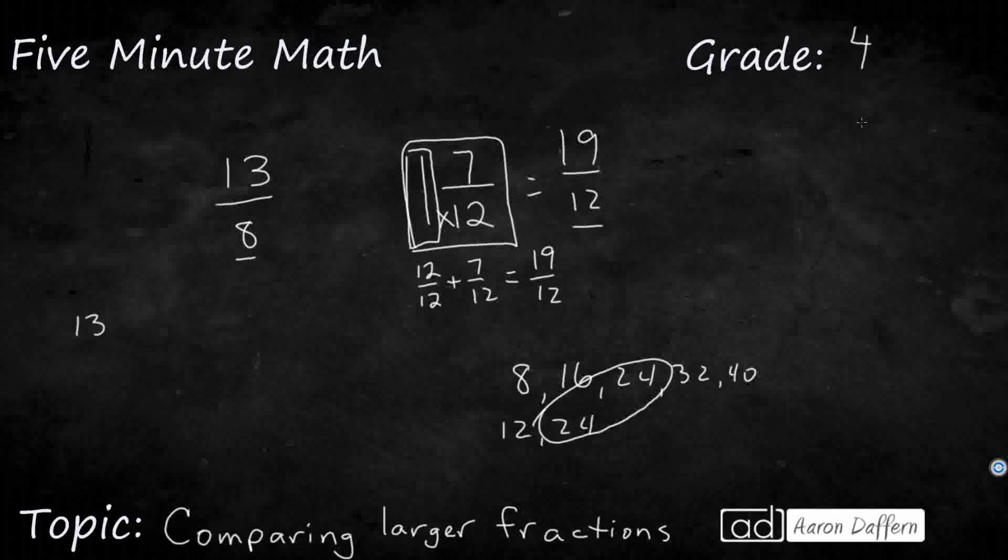Alright, so I'm going to change my thirteen-eighths. It's going to multiply by something equal to one to go to my new target denominator, twenty-four. So eight times what makes twenty-four? That's three, so I need to be three over three. So I need thirteen times three. That's going to be thirty-nine. Alright, so that's thirty-nine twenty-fourths.